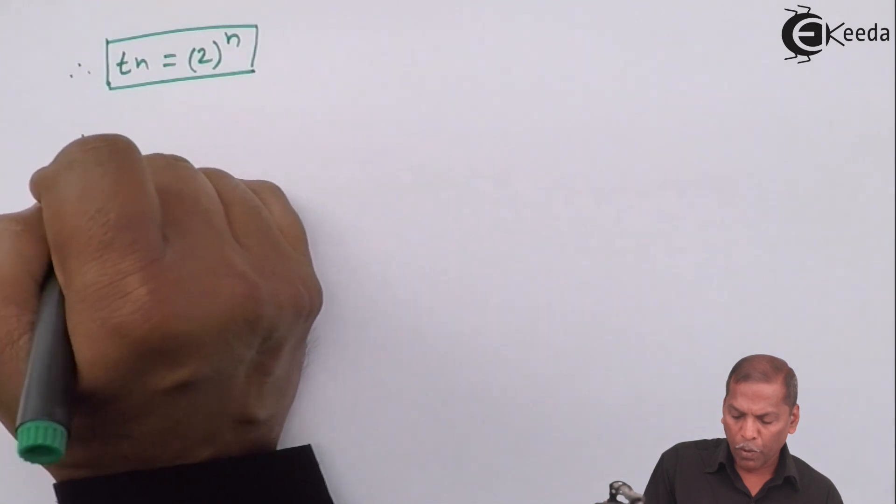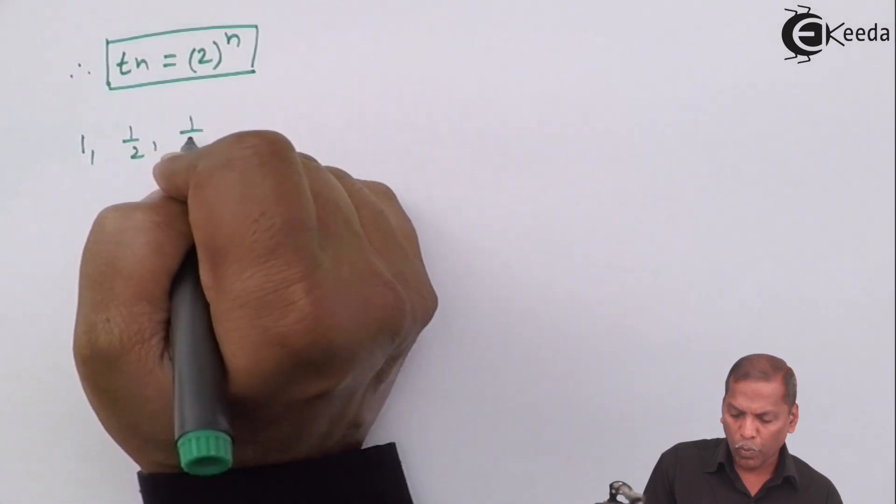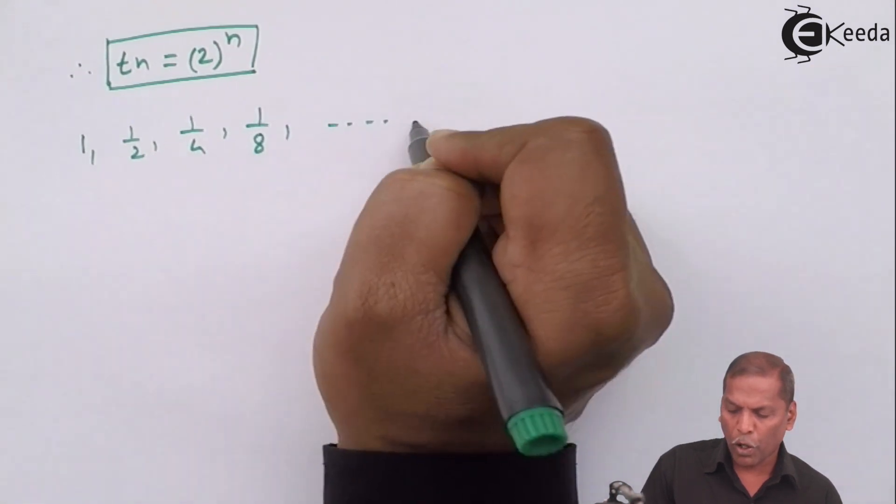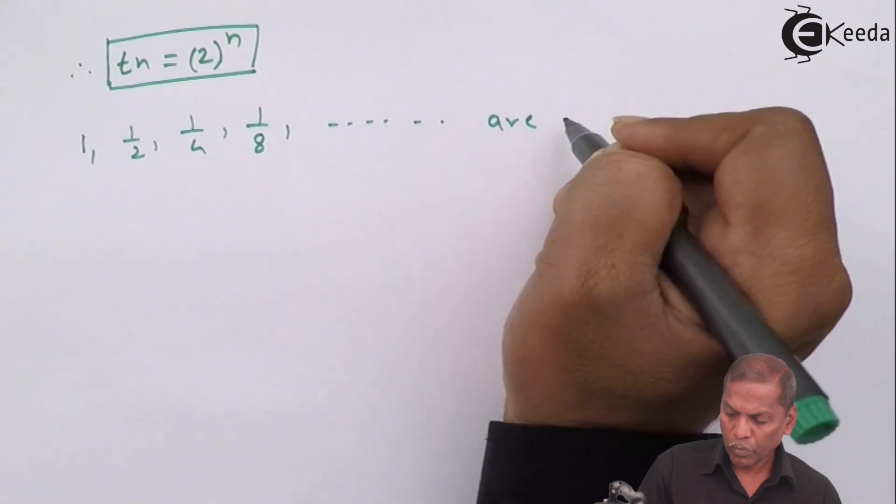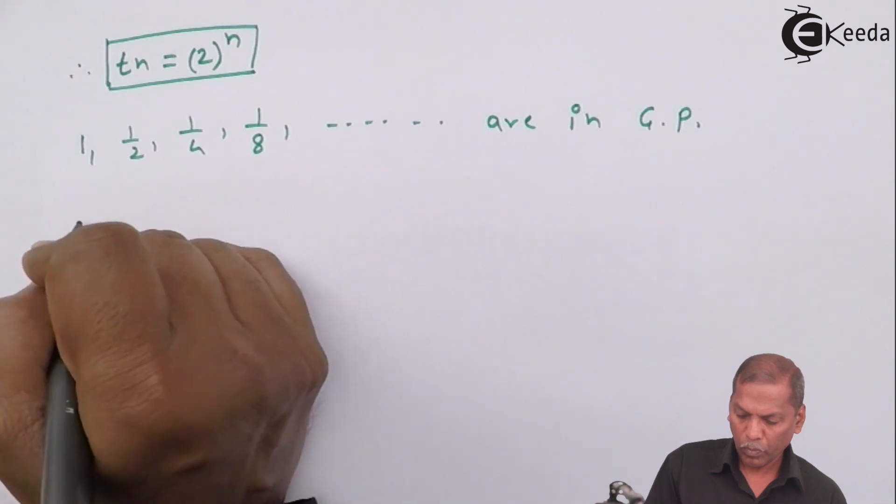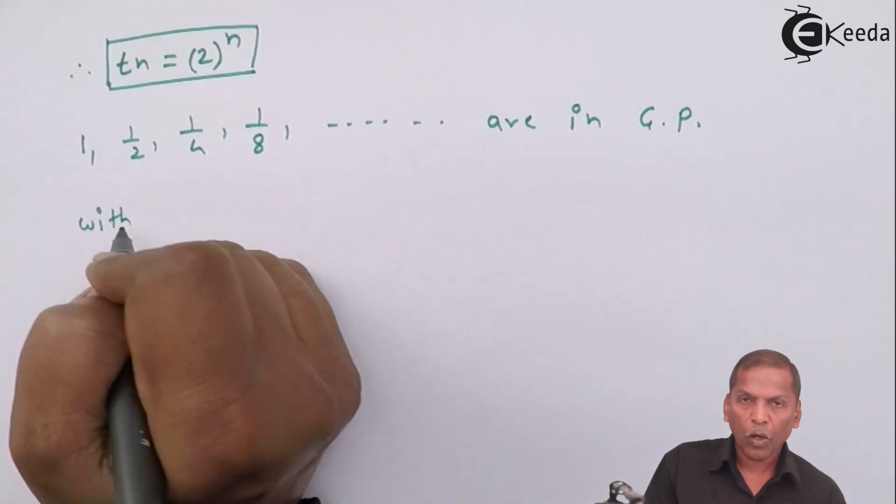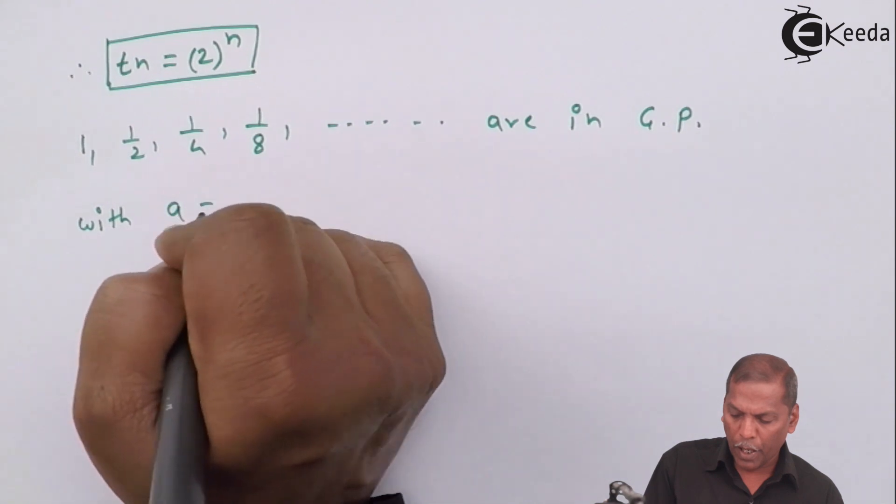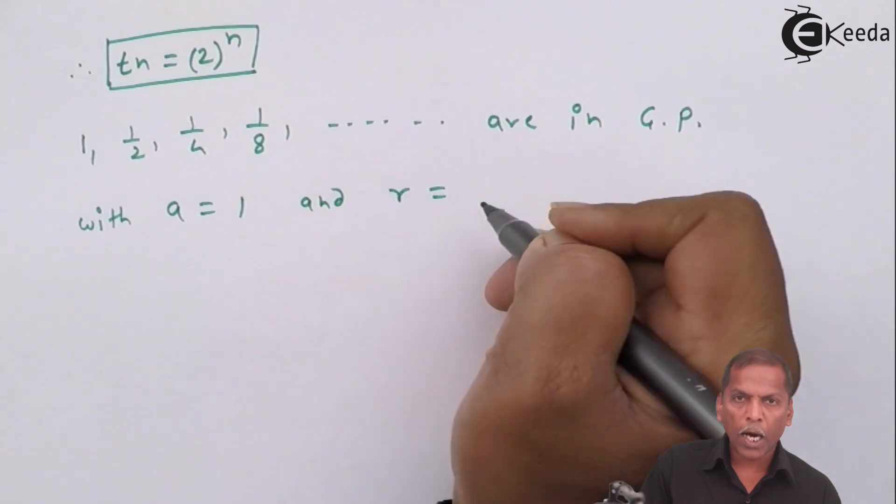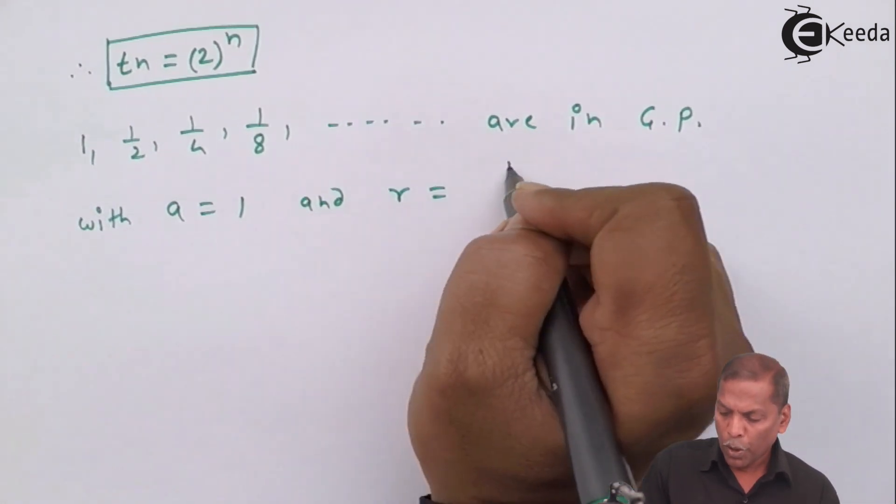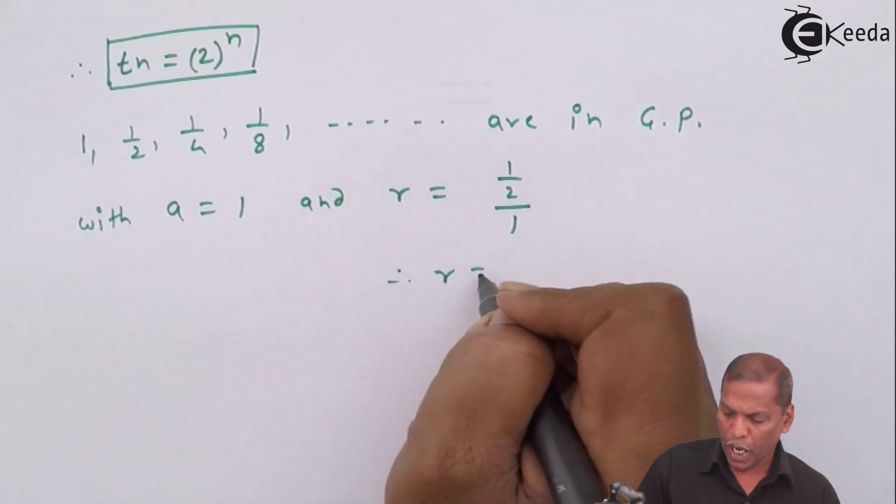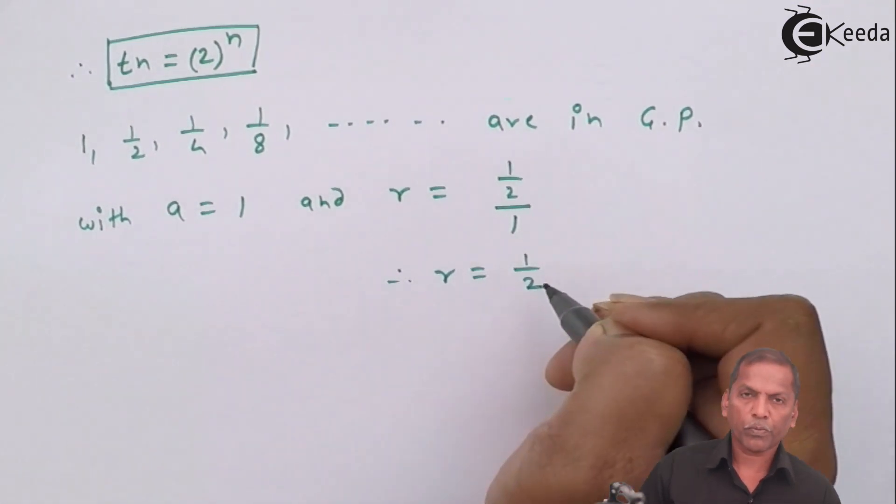that the numbers 1, 1 by 2, 1 by 4, 1 by 8 and going on, are in GP with first term a equal to 1 and common ratio r equal to second term 1 by 2 divided by 1. It means r equals 1 by 2.